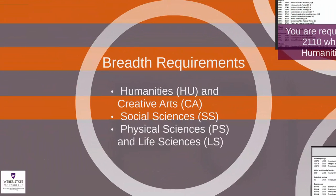The second set of requirements in general education is called the breadth requirements. The breadth includes Humanities and Creative Arts, and Social, Physical and Life Sciences. These courses must be passed with a D minus or higher, unless a higher grade is required due to major course requirements.